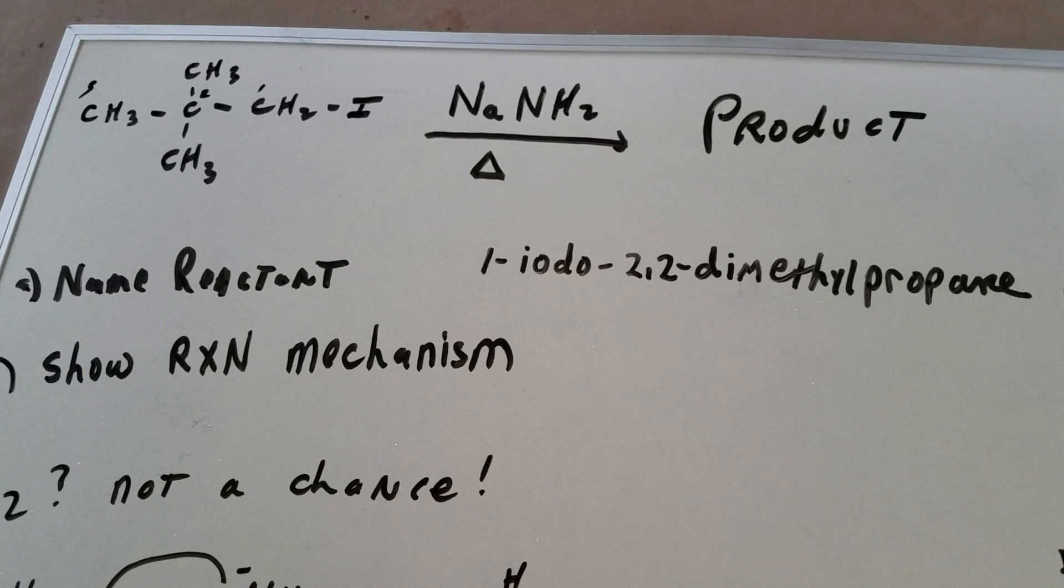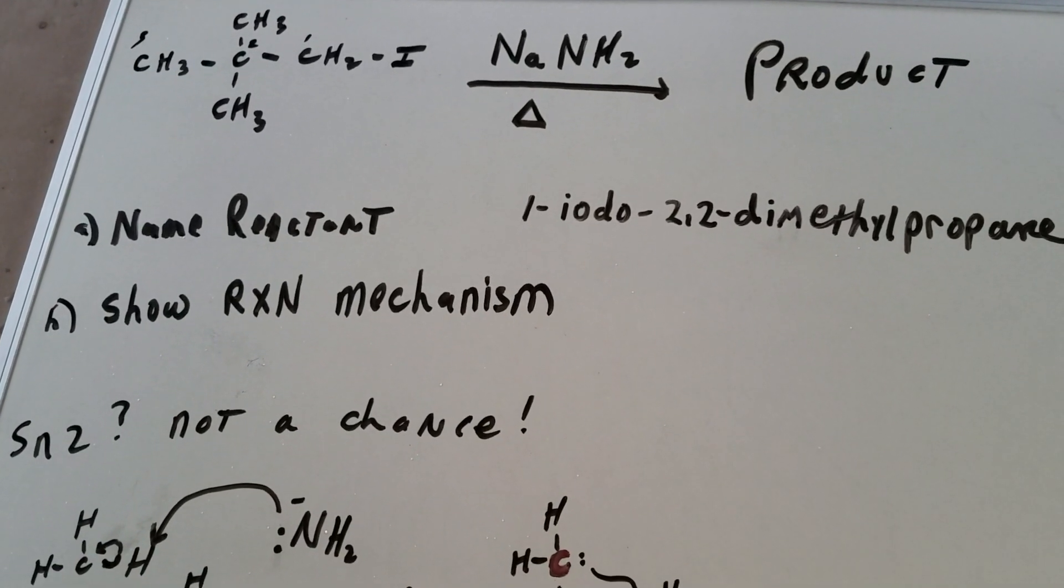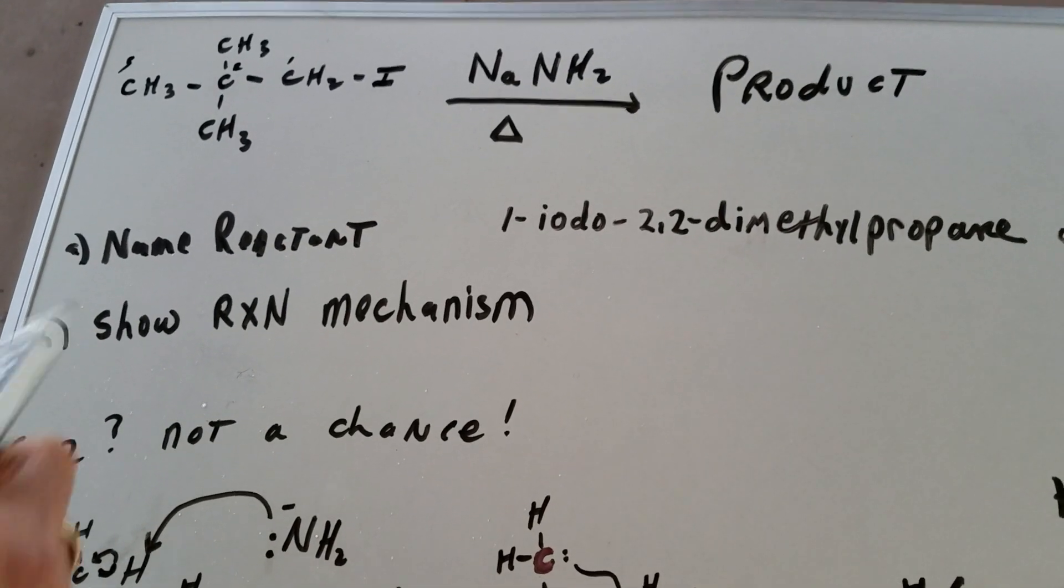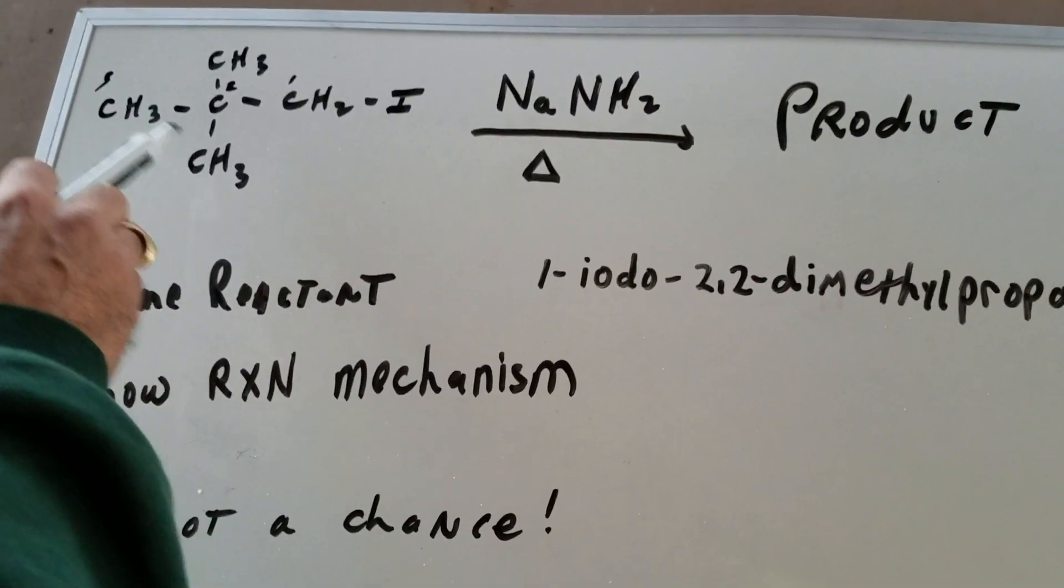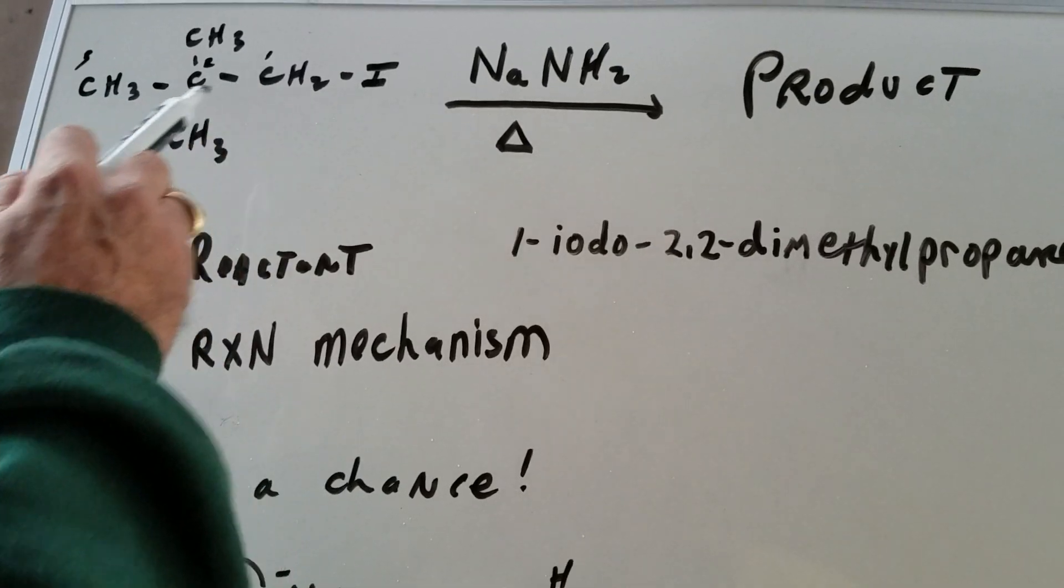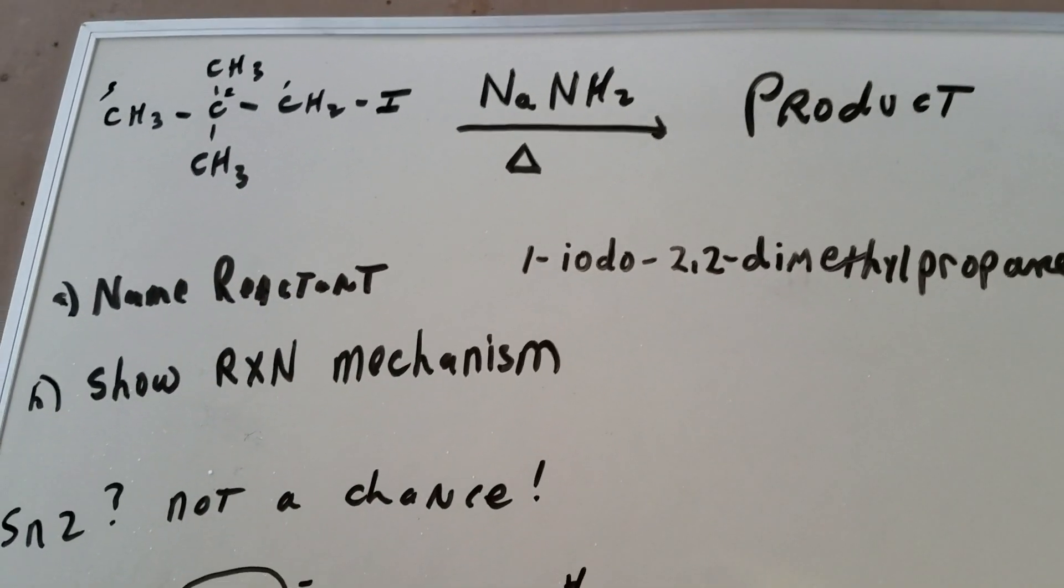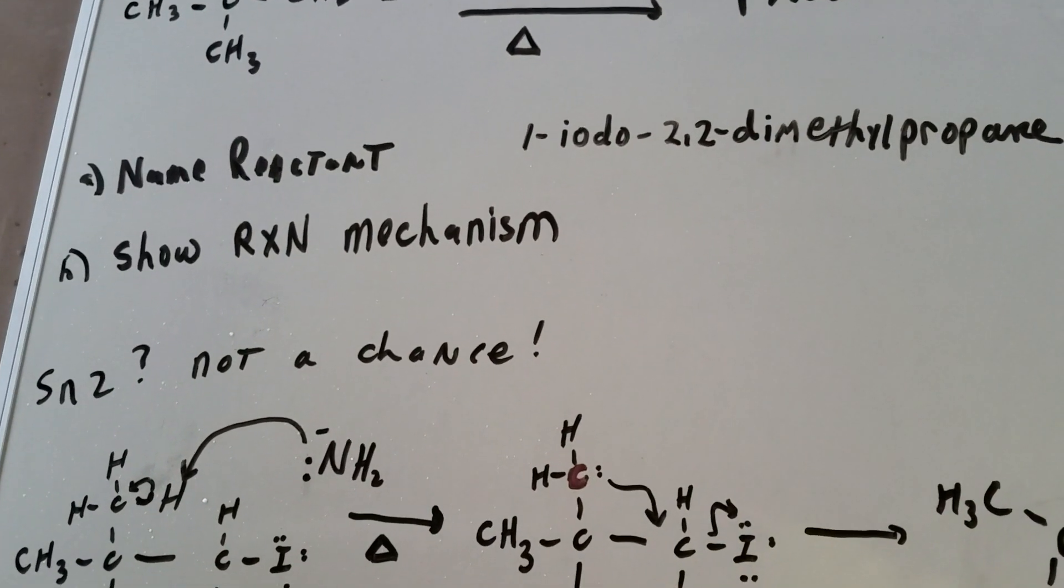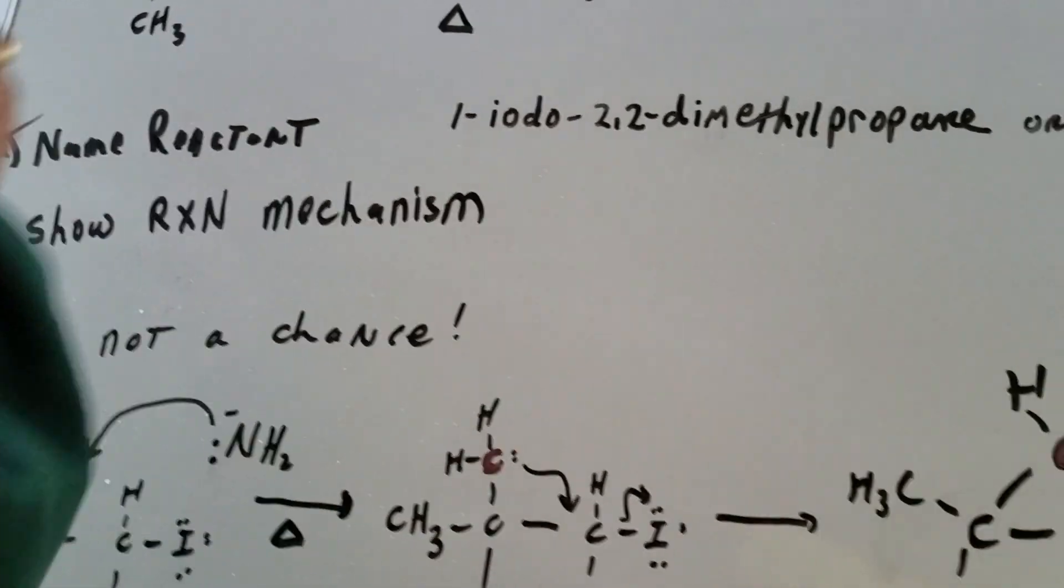Or I can use the common name neopentyl iodide. Be very careful about the word neopentyl. Notice it looks like you have a t-butyl group, but then there's a CH2 group after it. And that's the neopentyl group. So we take neopentyl iodide as the common name. So that's part A and that's pretty straightforward.